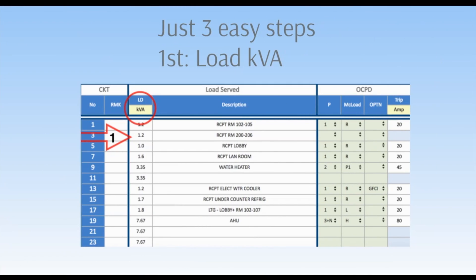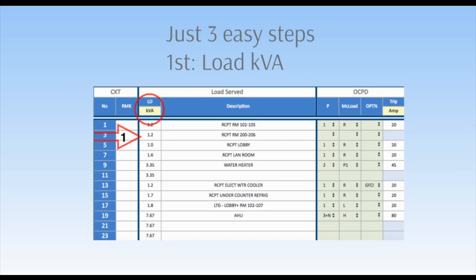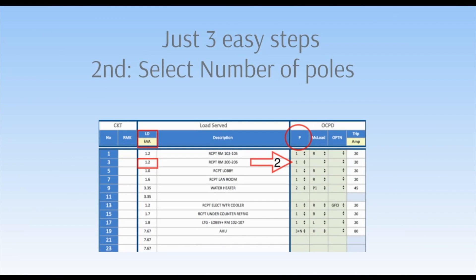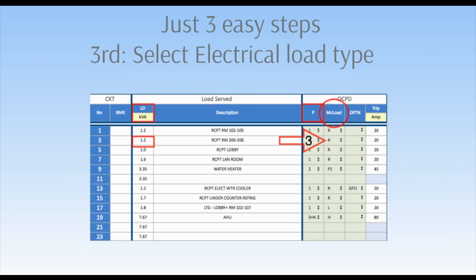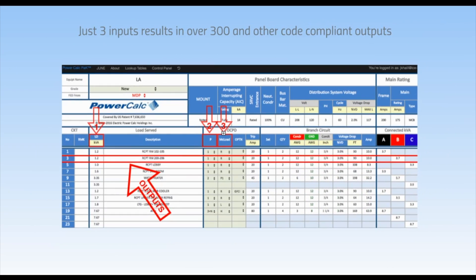Remember, PowerCalc is as easy as 1, 2, 3. Just three inputs per circuit results in over 300 NEC and IEEE outputs. First, input electrical load in KVA. Second, select number of poles. Third, select electrical load type. This cell on the branch circuit panel shows just a few of the automatically generated outputs. Now just keep going until your design is complete.